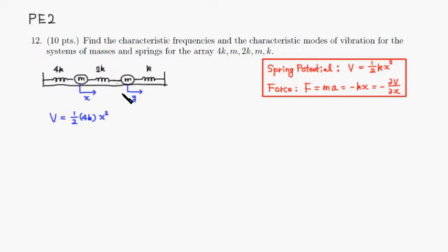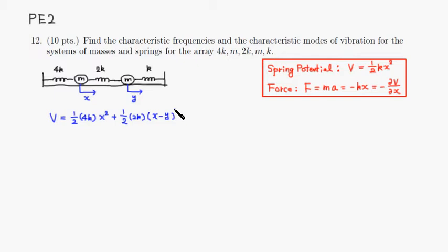The spring potential of the second spring is one half times 2k, and the displacement of the second spring is the difference between the two masses' displacements, so it's (x minus y) squared. The third spring is straightforward: one half times k times y squared.